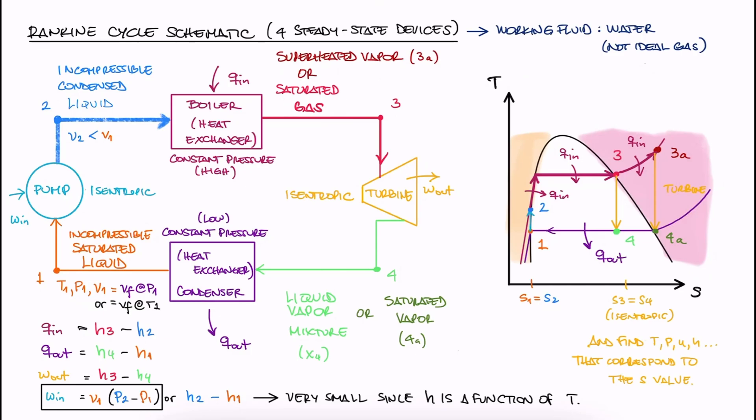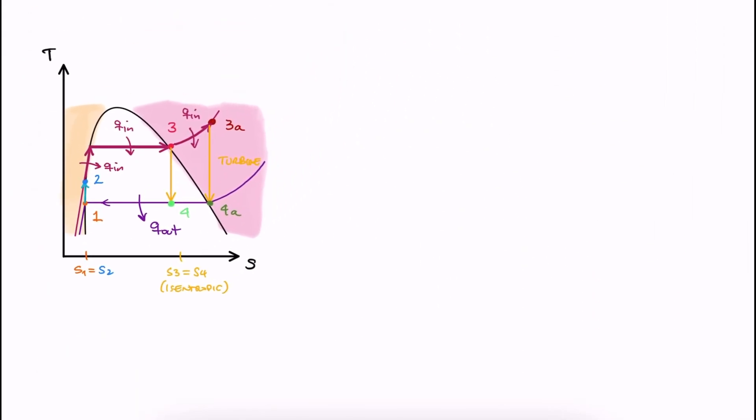Now, I just mentioned that state 3 and state 4 can be anywhere, and that's true, but there are clear advantages between the different options. Mainly, the efficiency will be dependent on where state 3 and 4 are. To improve efficiency, we can superheat. You can imagine that the process is more efficient if the turbine is working with a gas from start to finish, and not less and less gas as the liquid fraction of the substance increases as it moves towards 4.